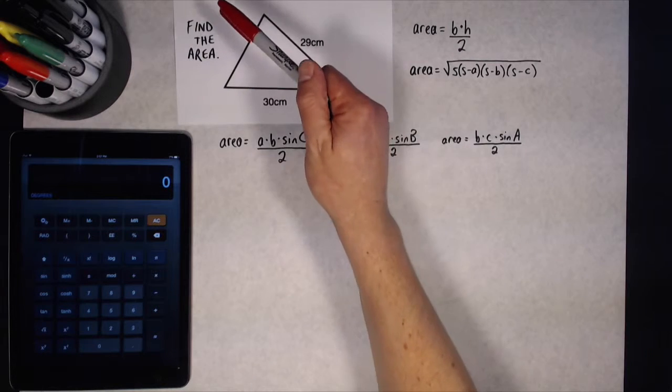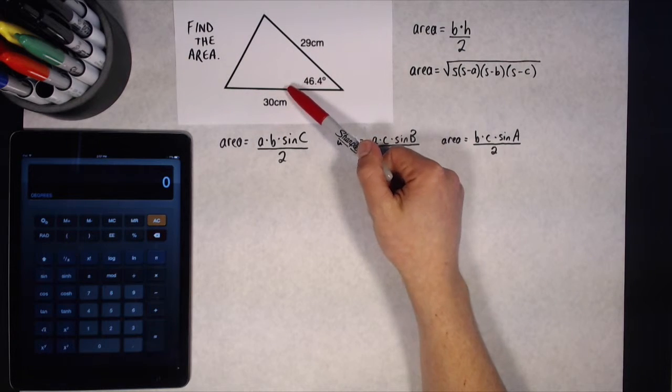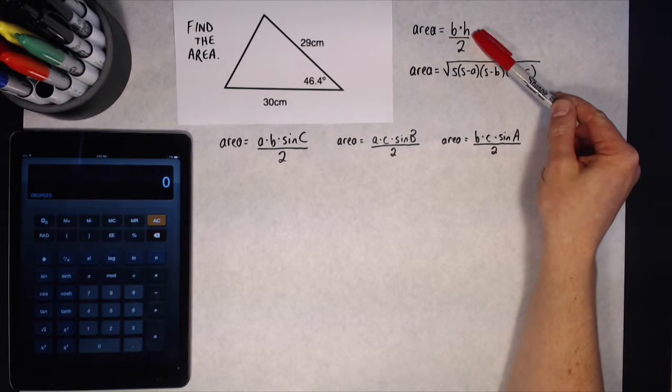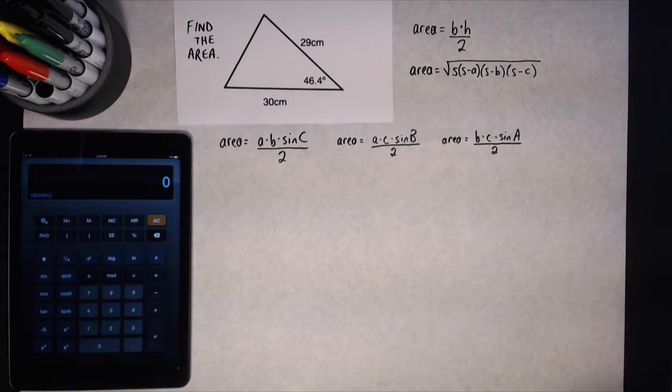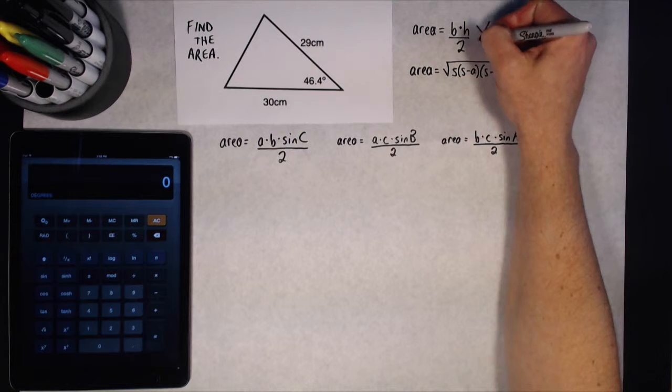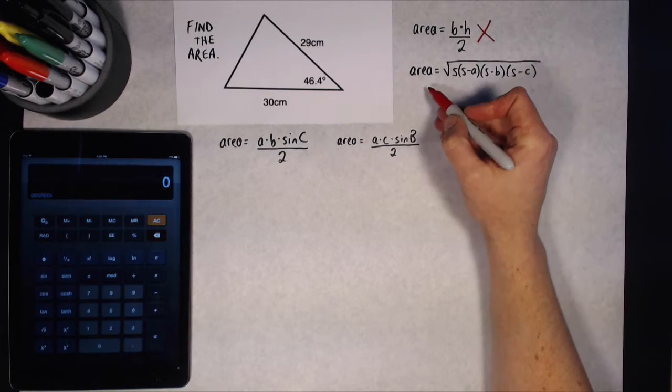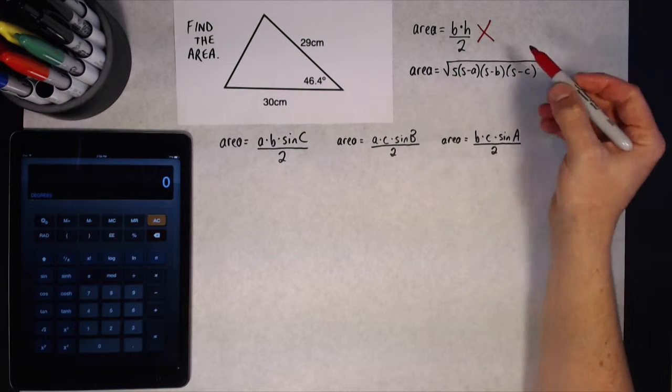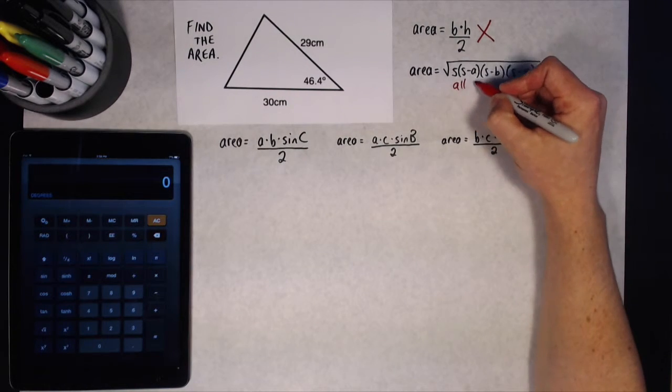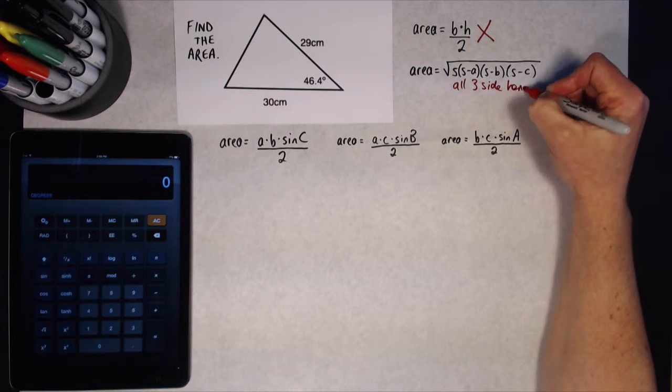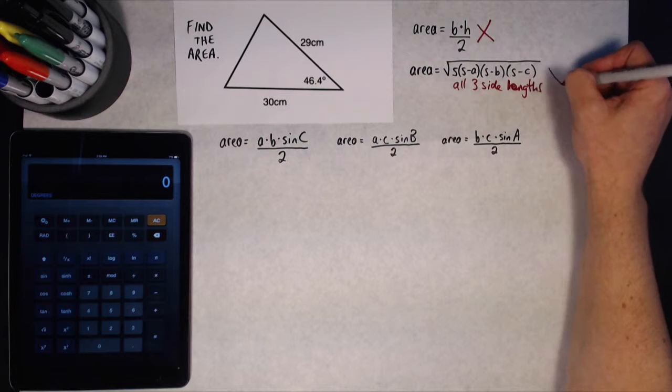Okay, so here I have a question that tells me to find the area of this triangle. Now when I think area of a triangle, the first formula that comes to mind is base times height divided by two. I can't use that one here because I don't have two sides that meet at a right angle, so this one's no good. The next formula I might think of to find the area of a triangle is one called Hero's Formula. This one is when you know all three side lengths. And I don't know all three sides, I only know two of them, so this one's no good.